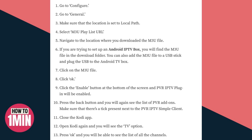You can add the M3U file to a USB stick and plug the USB into the Android TV box, then click on the M3U file. Then you need to click OK and click the Enable button at the bottom of the screen.